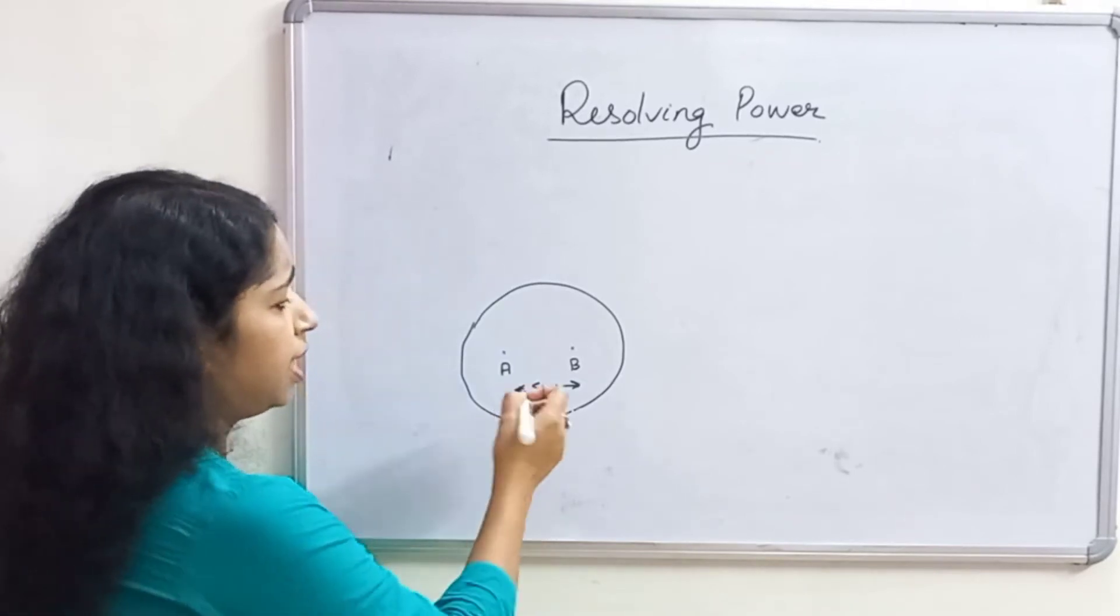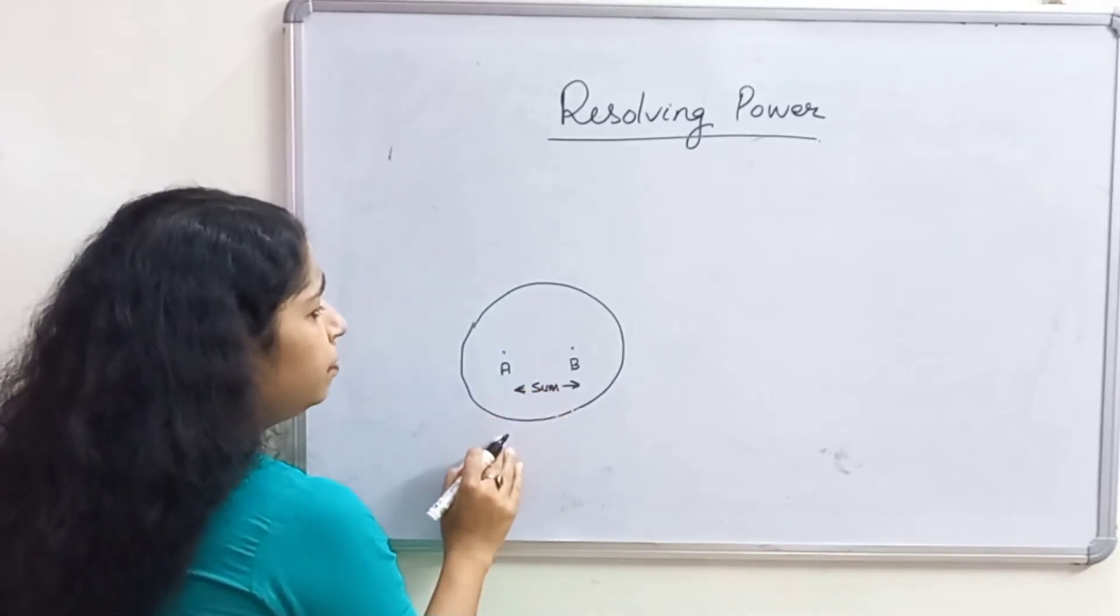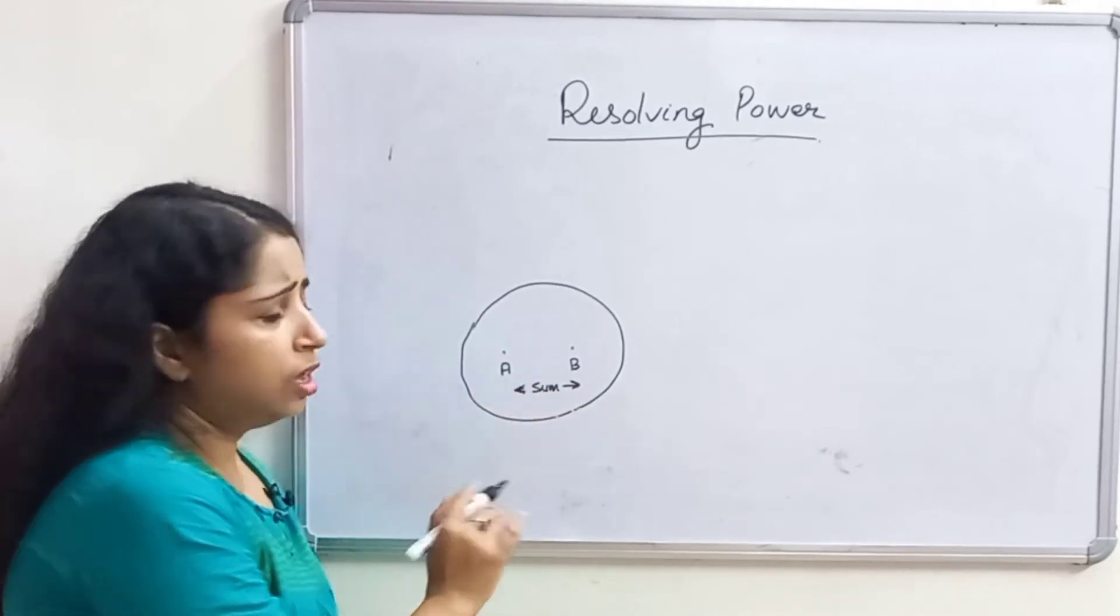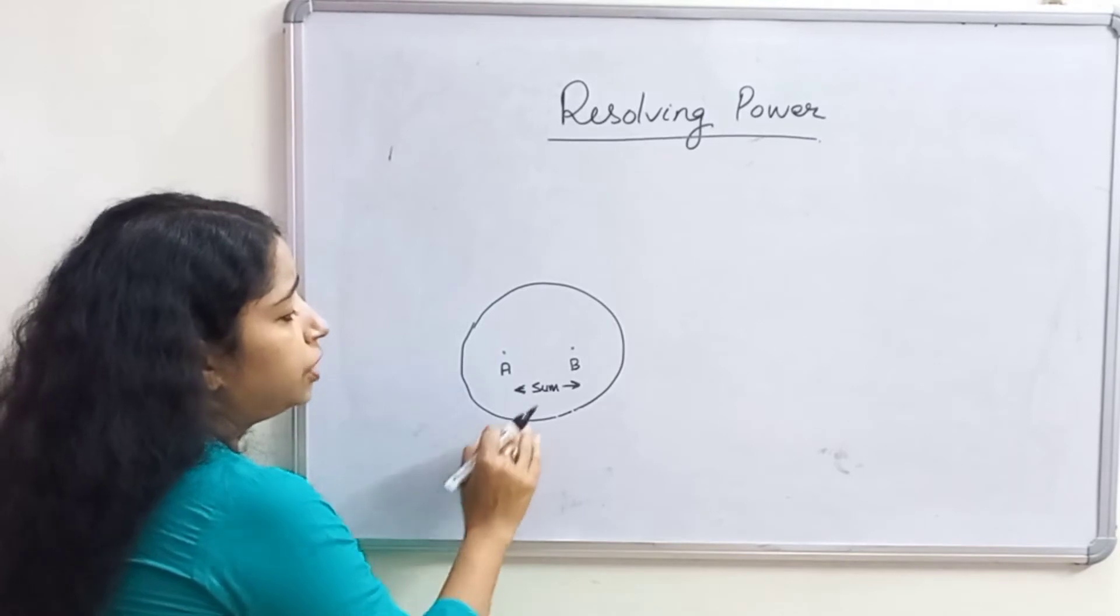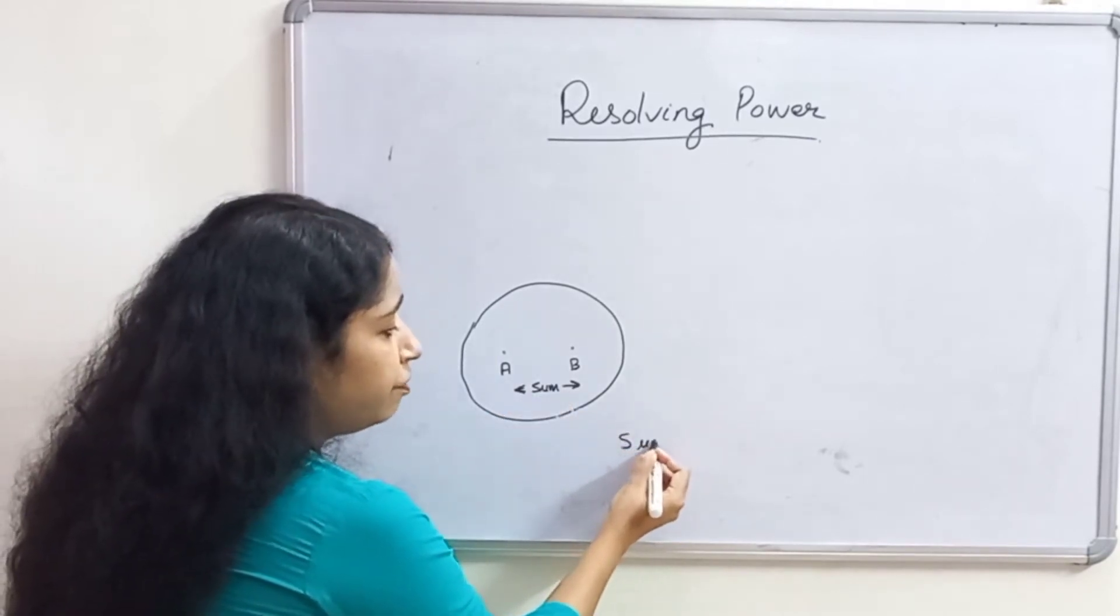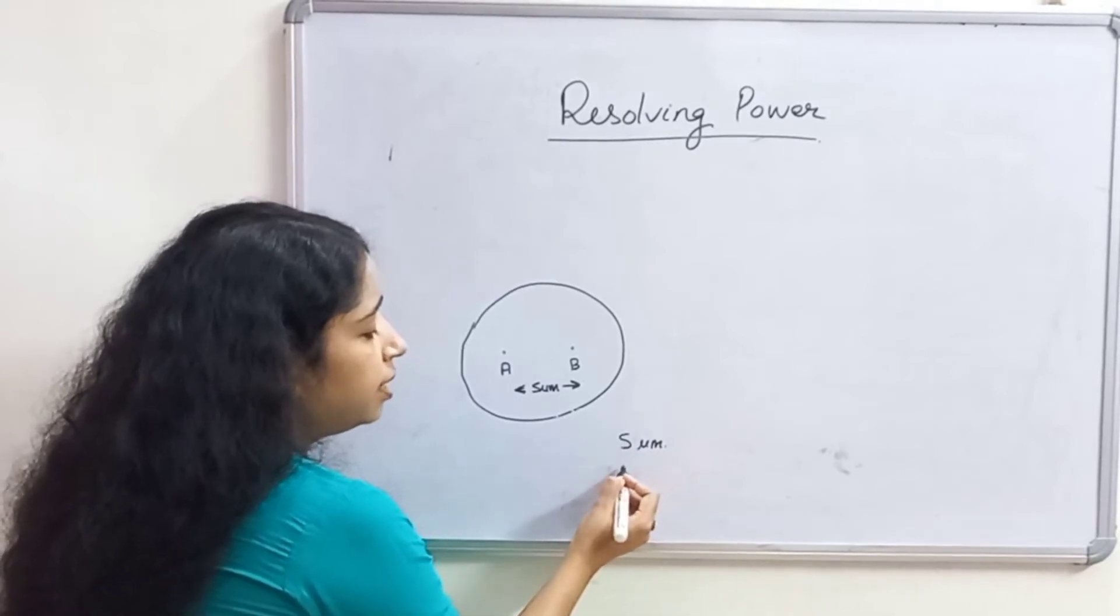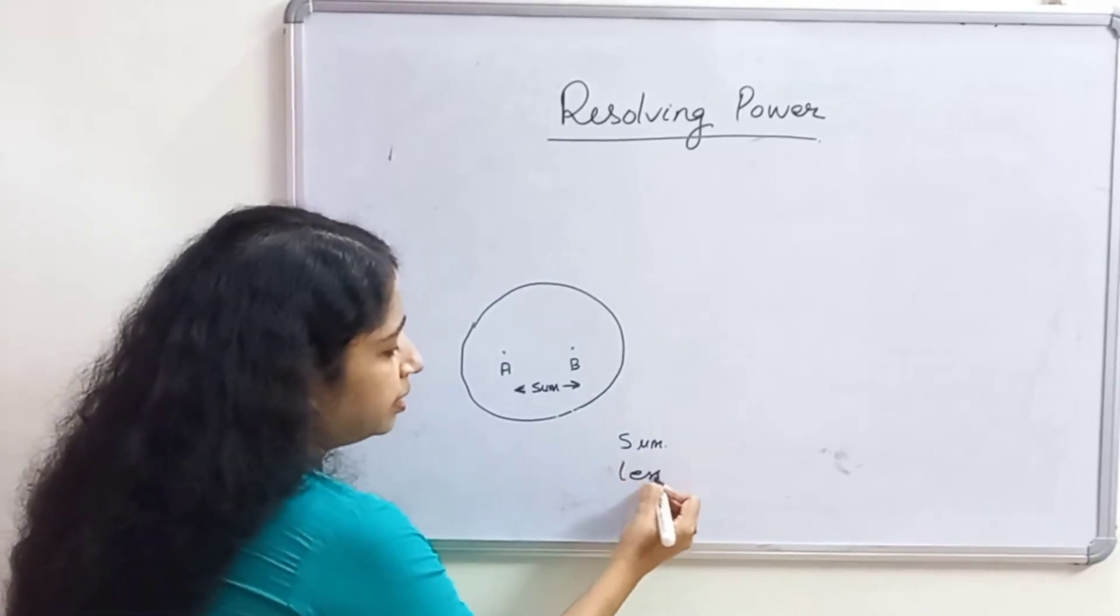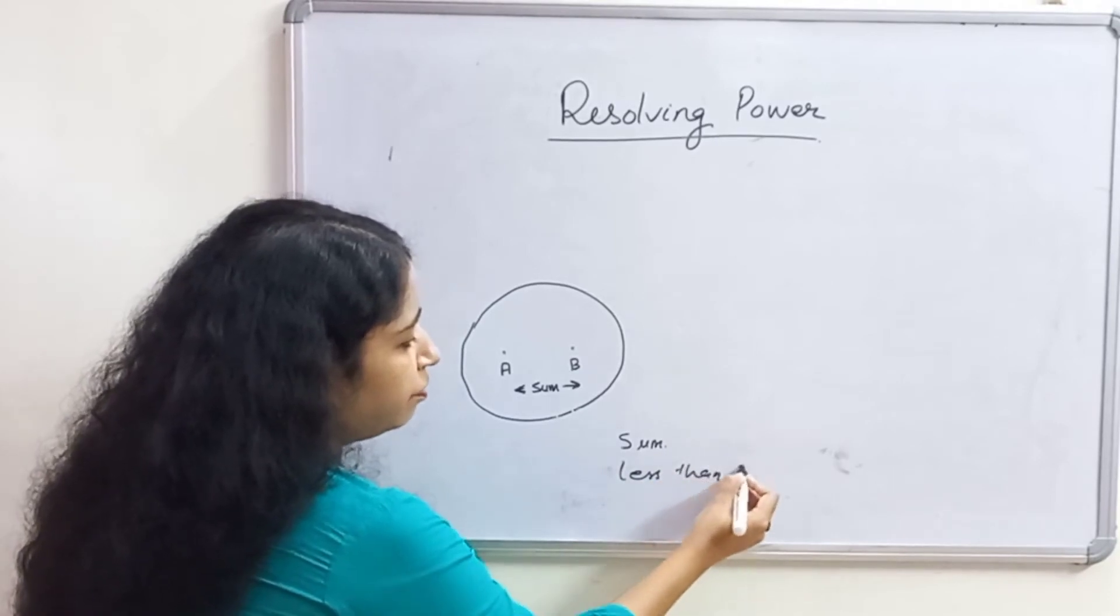I need a microscope which has sufficient dissolving bar to resolve these two points. Or I need a microscope which has a limit of resolution of 5 micrometer or less than 5 micrometer.